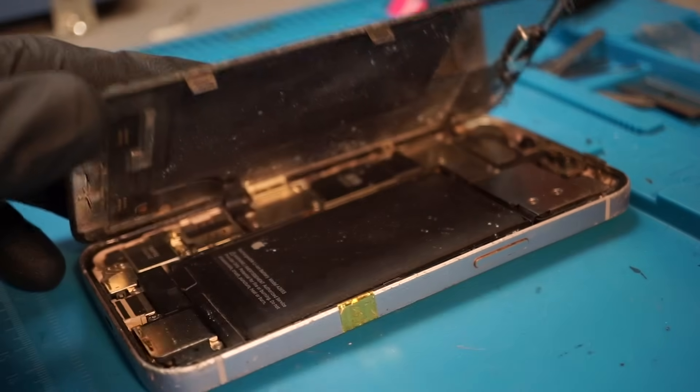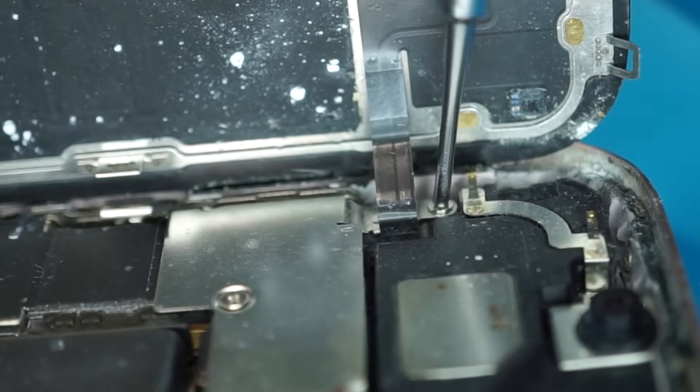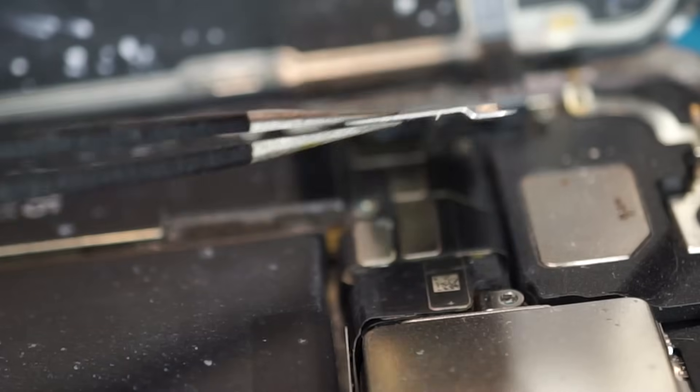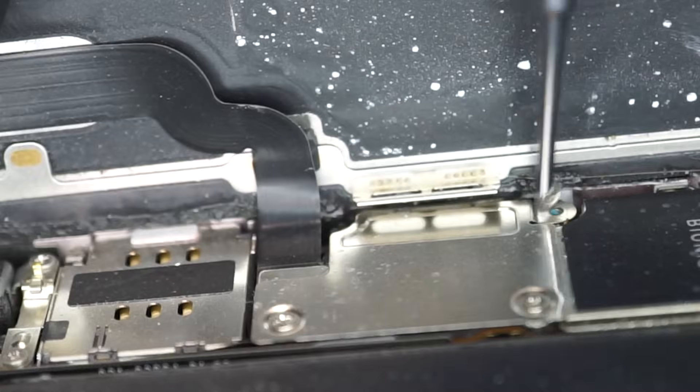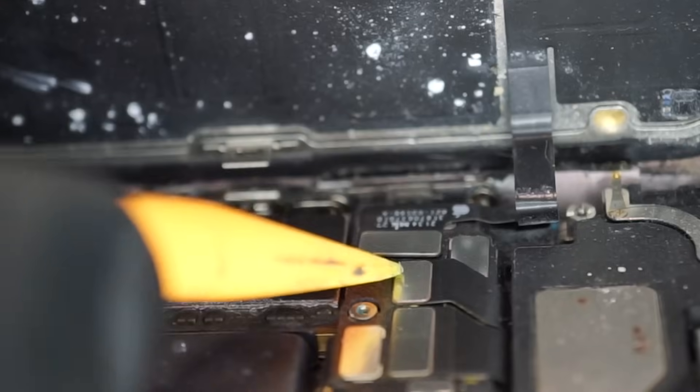We now get our first look inside the phone. But what's all this white powder? Remove these three screws and this shield, and this one. Disconnect the battery, the display, the proximity sensor.